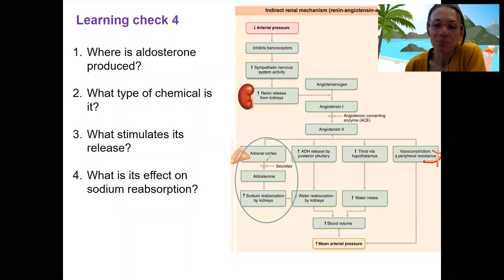So aldosterone is secreted by the adrenal cortex, stimulated initially by low blood pressure, although there can be other stimuli we'll get to, and directly by angiotensin. This is part of that RAS system pathway, and it's going to increase sodium reabsorption by the kidneys, as well as increased potassium secretion. So that's the new piece.